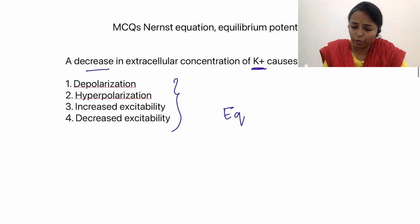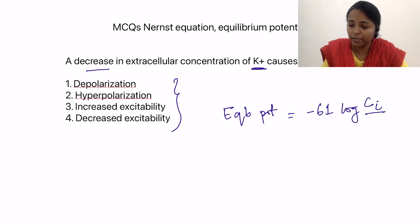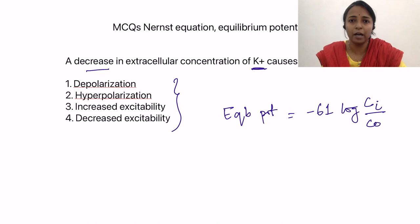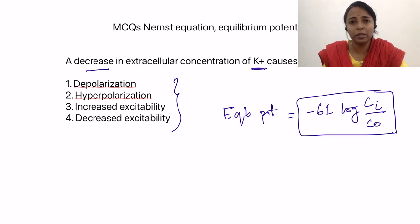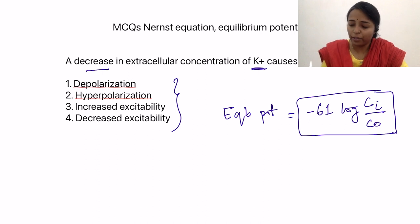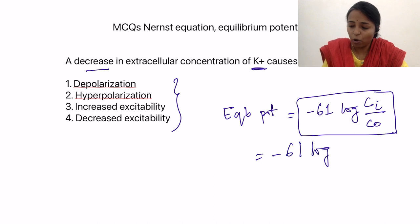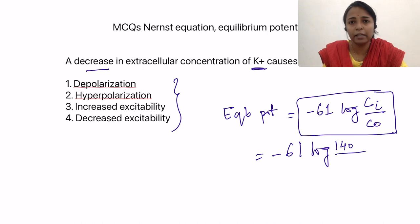The Nernst equation goes like this: equilibrium potential for a particular ion is equal to minus 61 log concentration of the ion inside divided by concentration of the ion outside. This is the simplified version. By knowing this, we can get the equilibrium potential for any ion. For potassium, it is minus 61 log — concentration inside is normally 140 milliequivalents per liter, and concentration outside is 4 milliequivalents per liter.